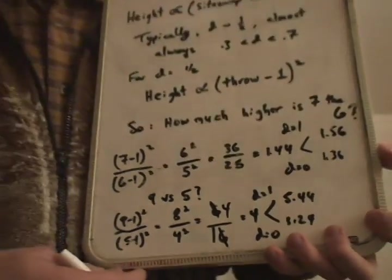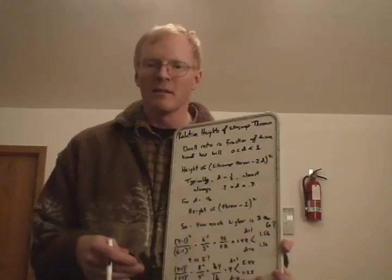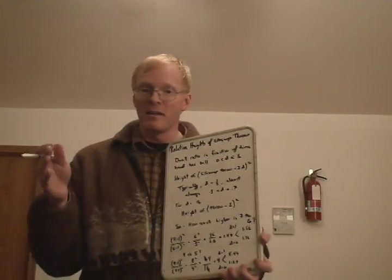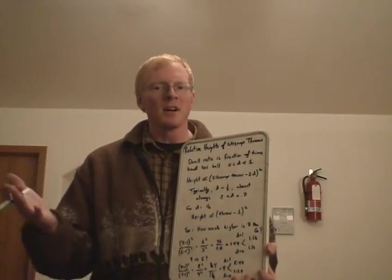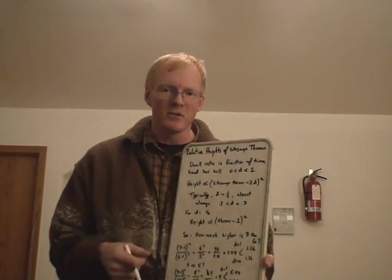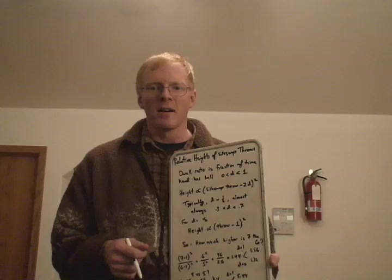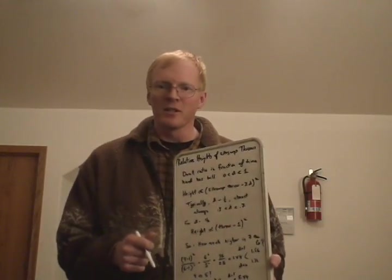Please notice that even though the siteswap value of 9 is less than twice the siteswap value of 5, the throw has to be four times as high in order to take the extra time. Once again, thanks to gravity. That's it. Thanks for watching.